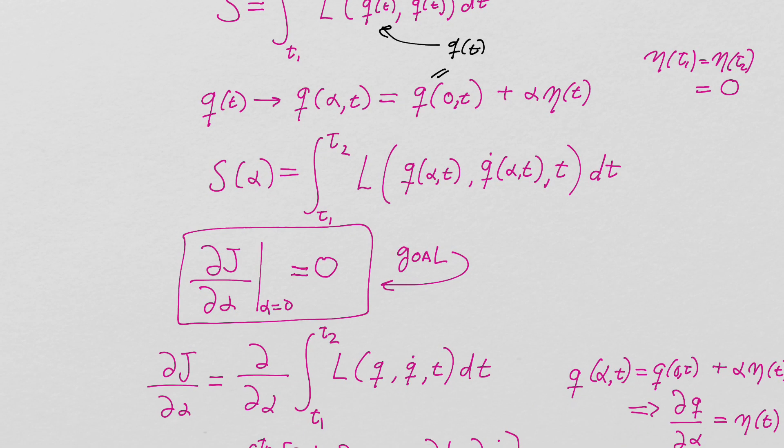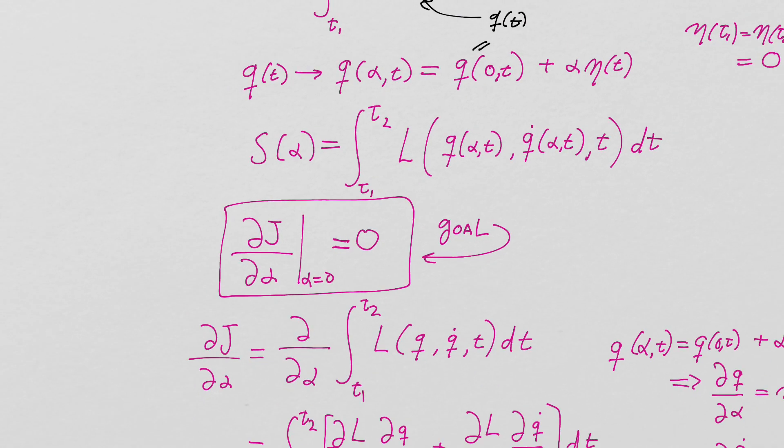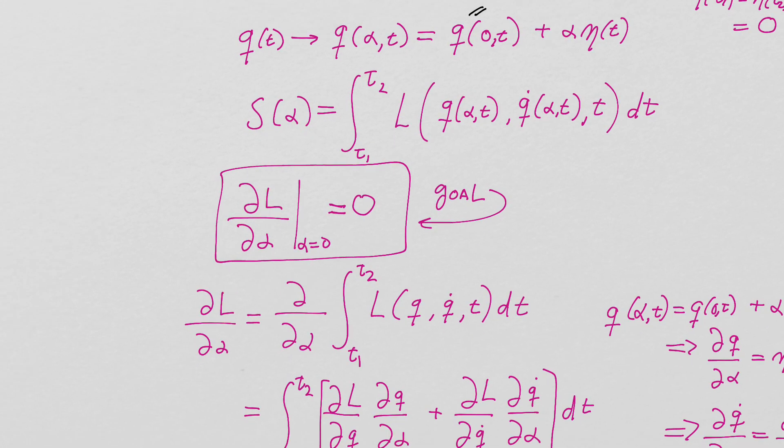So now when we talk about minimizing the functional, or minimizing the action, we want this derivative of this action when alpha equals zero to be zero. That's equivalent to our principle of least action, is finding the derivative of this guy when alpha equals zero, it's got to be zero.